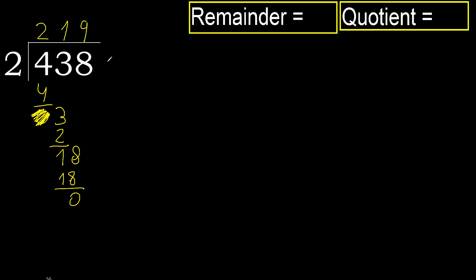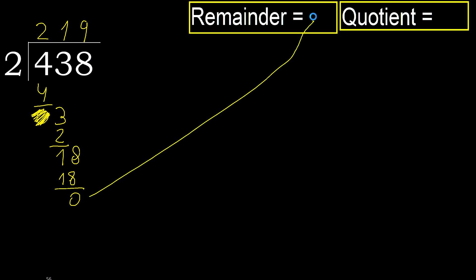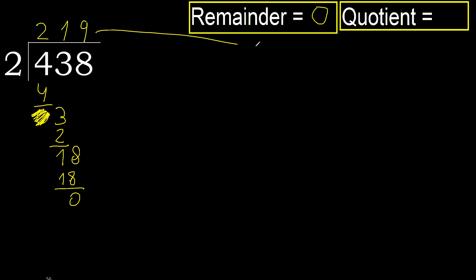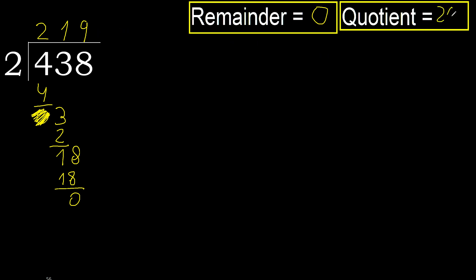There is no next number, therefore finish it. 438 divided by 2.